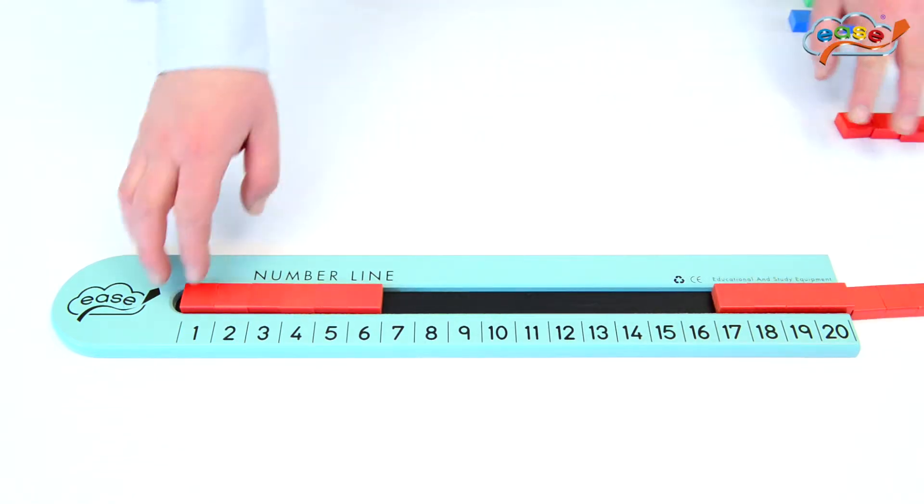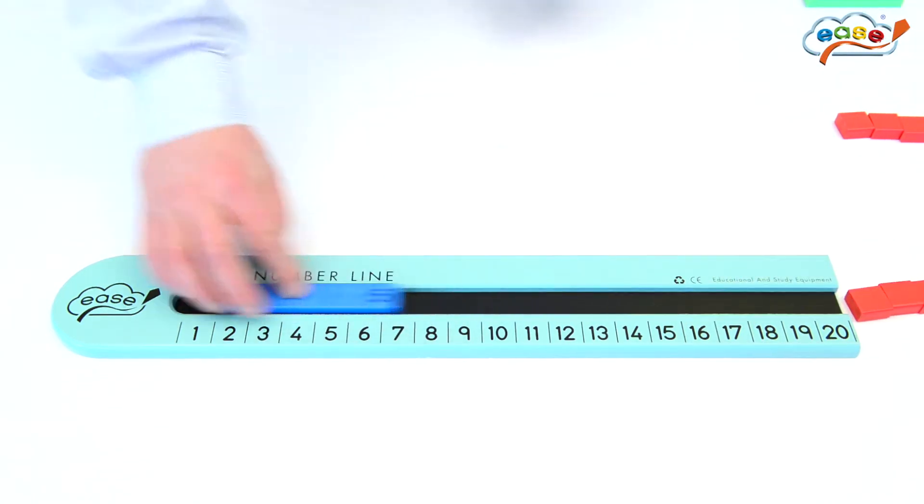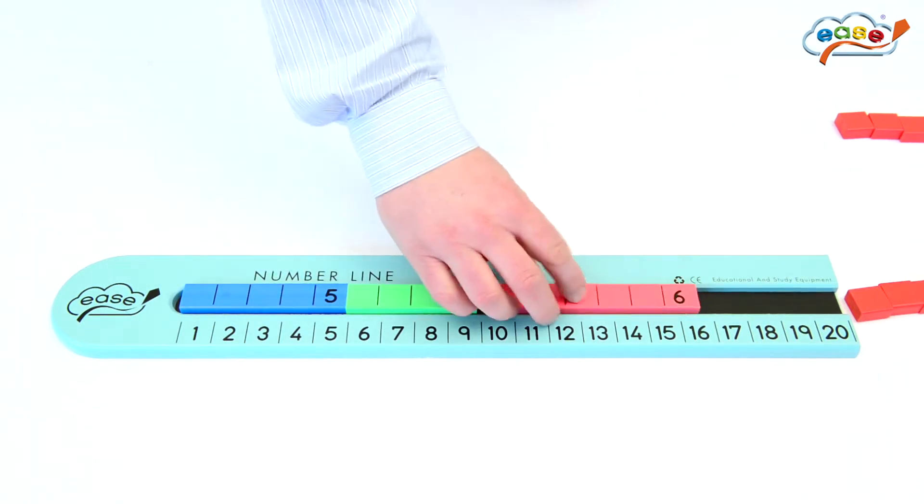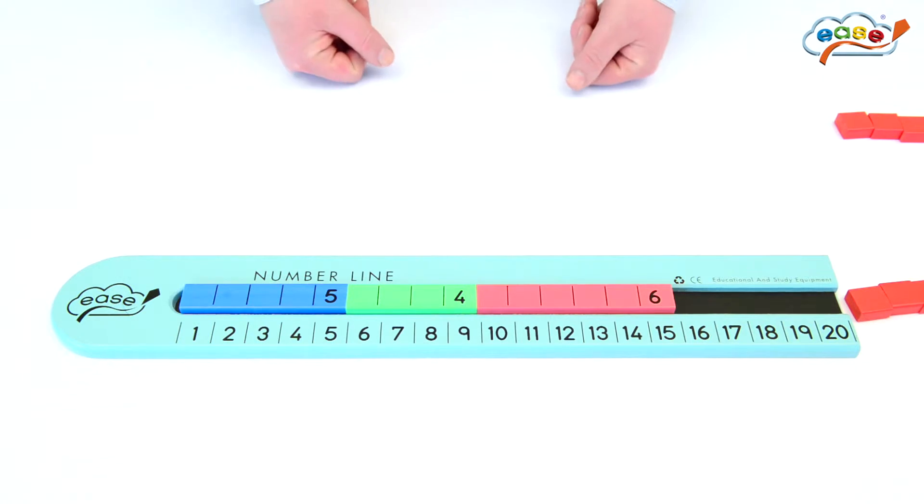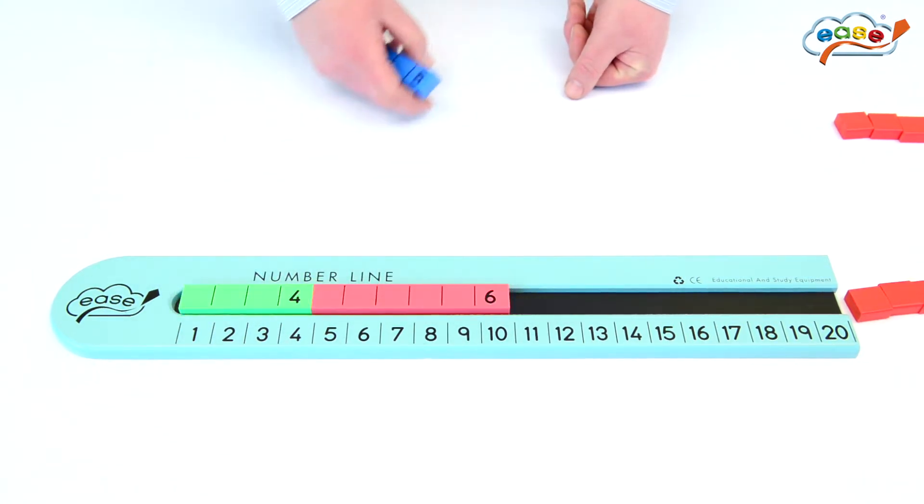Now, what's particularly nice about the product is it's also used in conjunction with the Ye's number rods. For example, we have 5 plus 4 is 9, 9 plus 6 is 15, and we can see simple subtraction, for example, 15 minus 5 is 10.